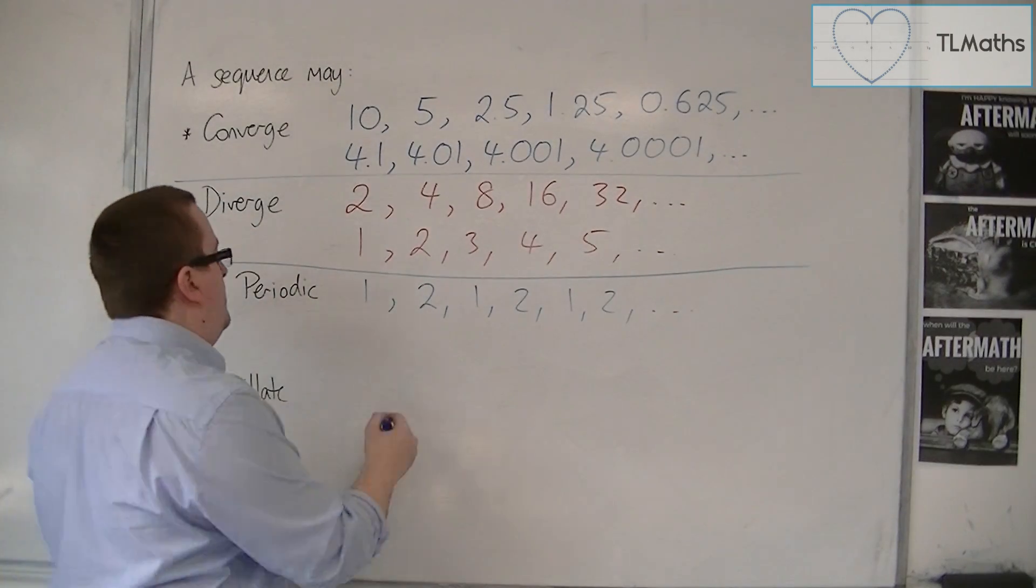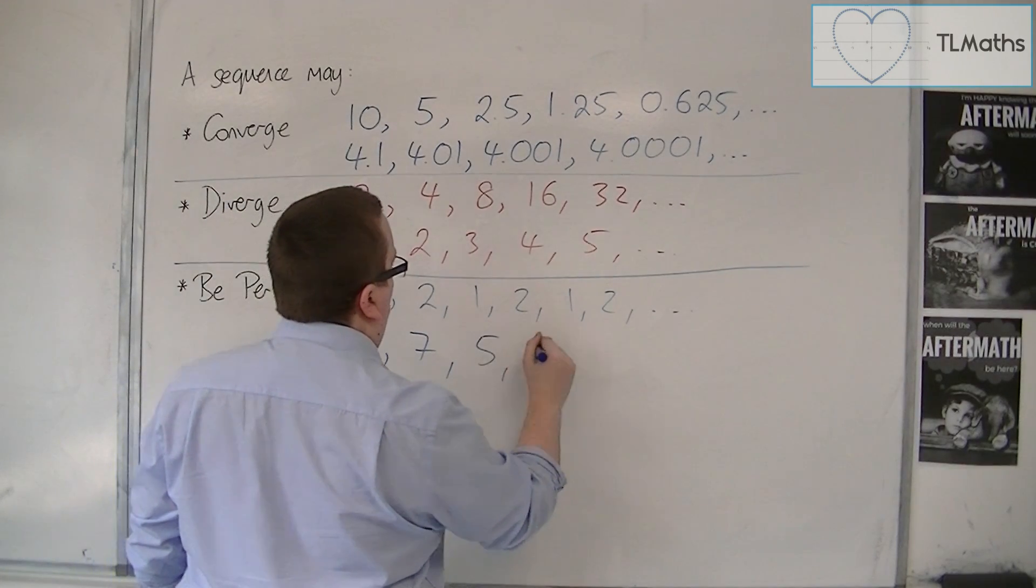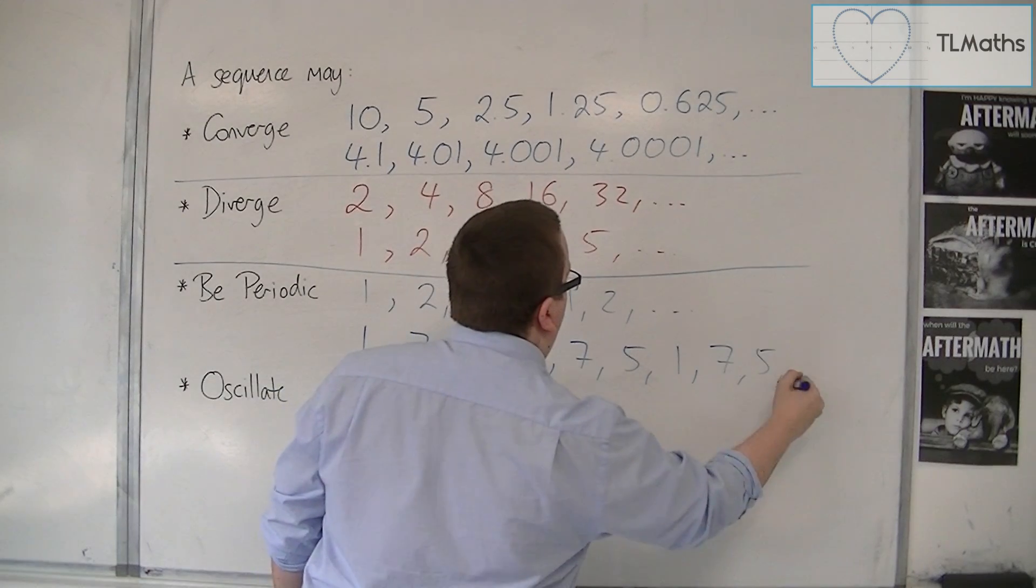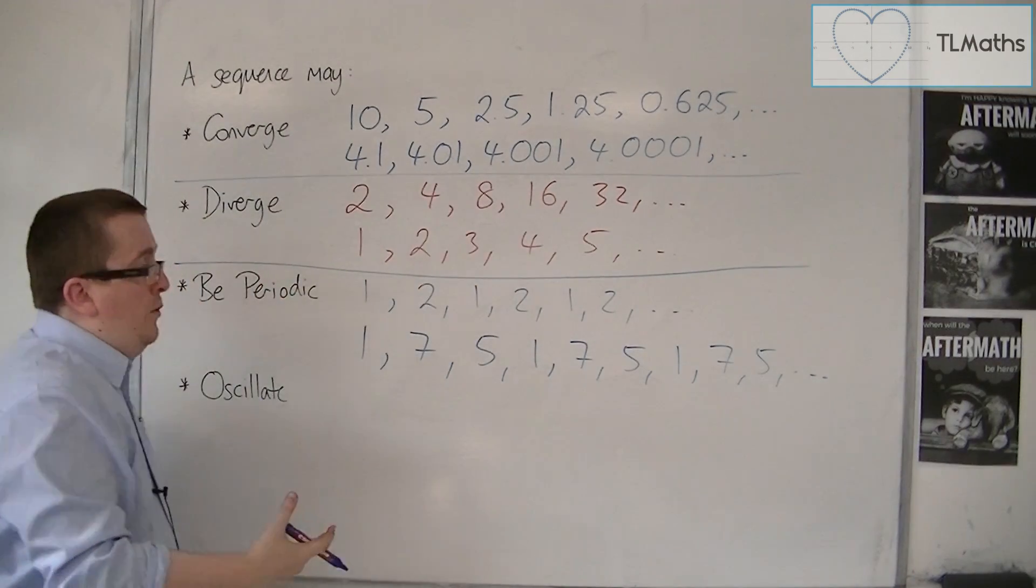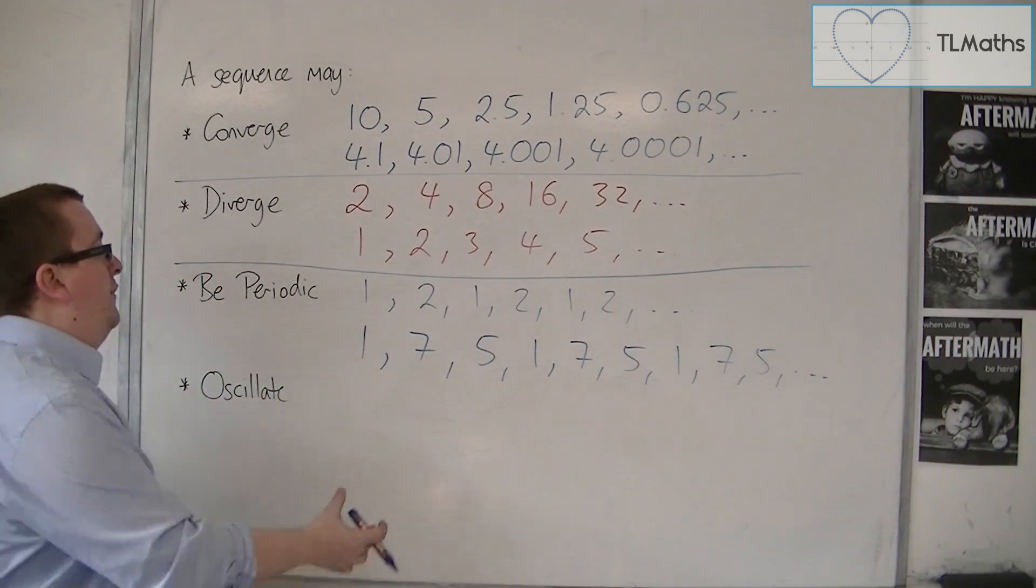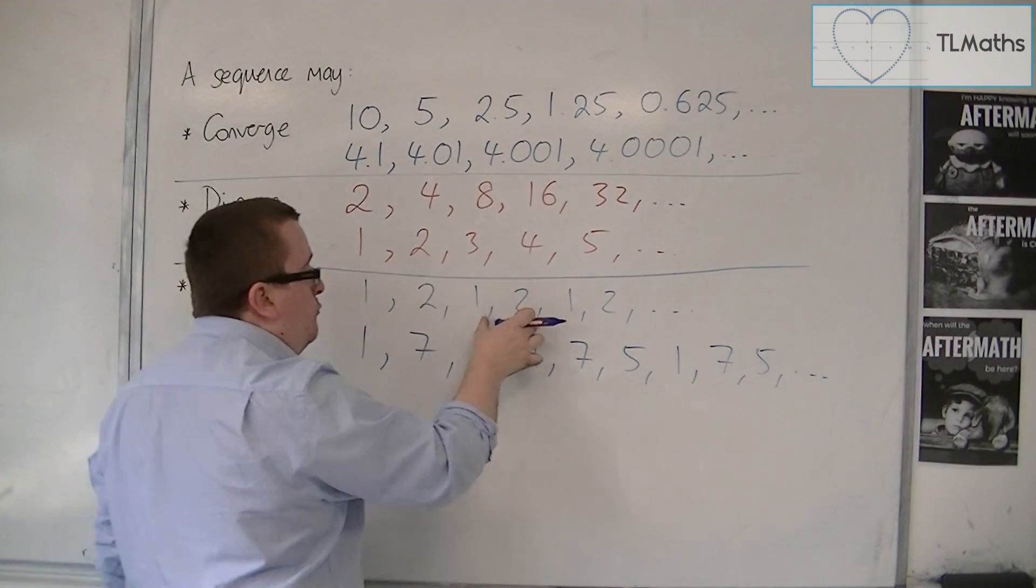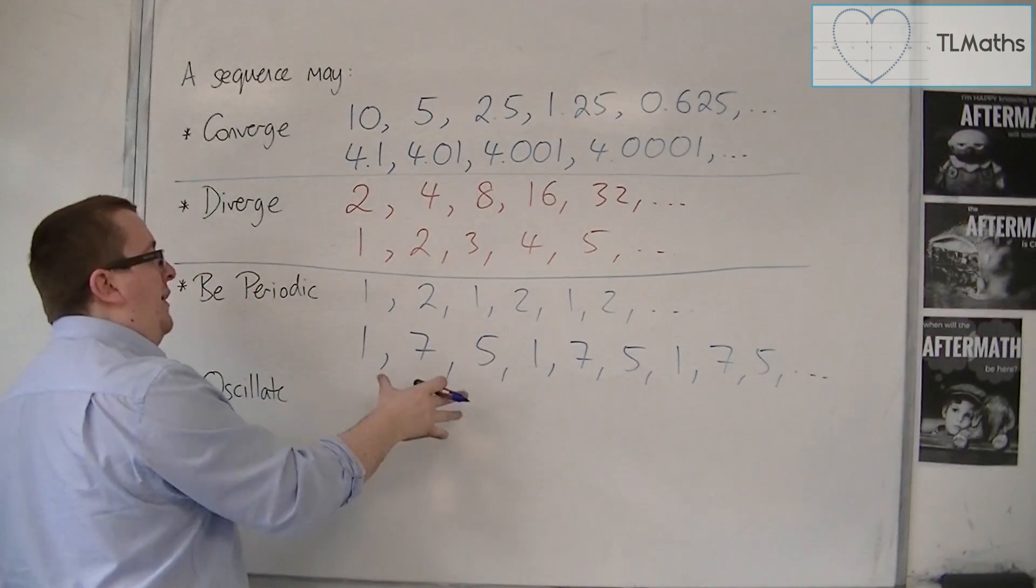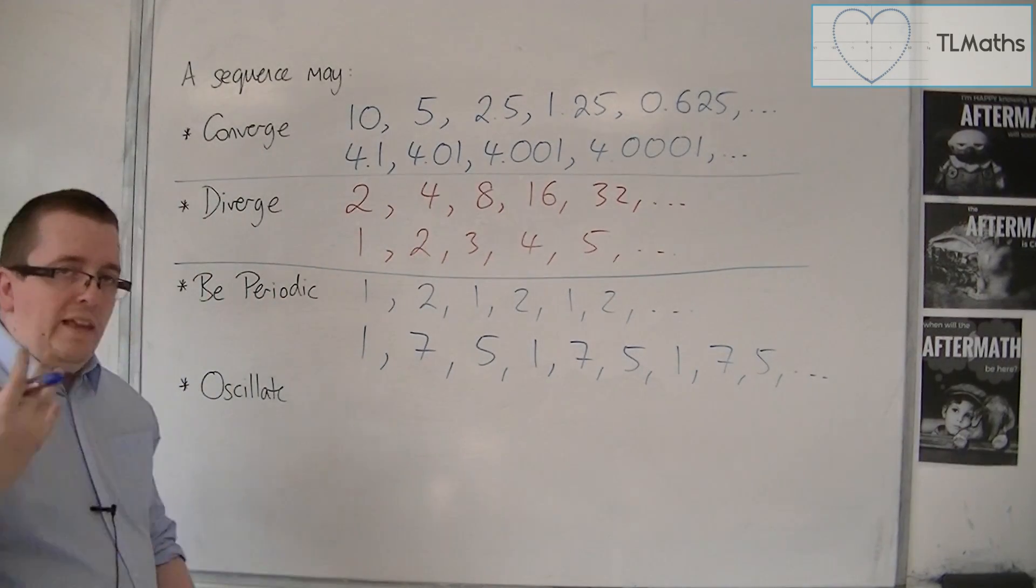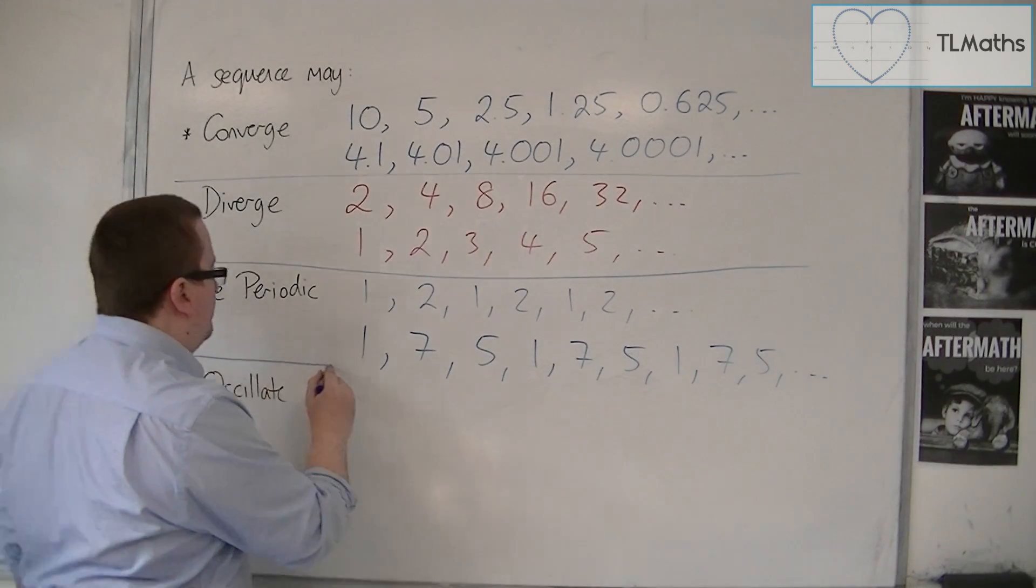Or, it could be 1, 7, 5, 1, 7, 5, 1, 7, 5. Both of these would be deemed to be periodic. This one would have a period of 2 because it's repeating every 2 terms, and this has a period of 3 because it's repeating every 3 terms. That's what we would deem as a periodic sequence.